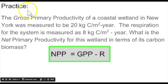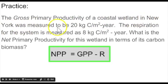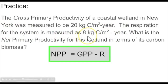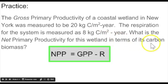Time for some practice. The gross primary productivity of a coastal wetland in New York was measured to be 20 kilograms of carbon per meter squared over the course of a year. The respiration for the system is measured as 8 per year. What is the net primary productivity for this wetland in terms of its carbon biomass?